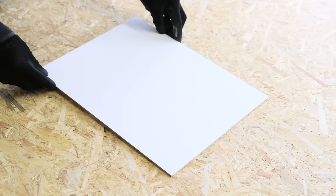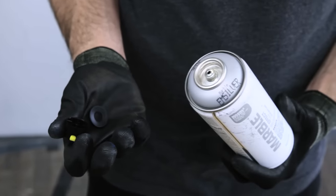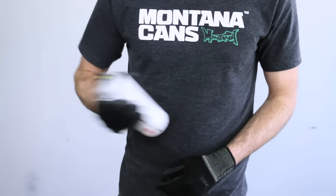Surfaces should be clean and dry. Remove the safety ring by removing the nozzle and turning the can upside down, allowing the ring to fall out. Shake can well for 2-3 minutes.